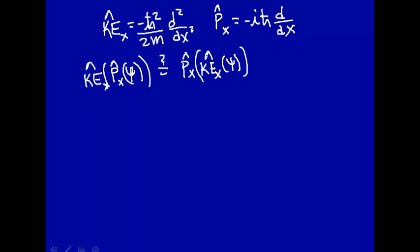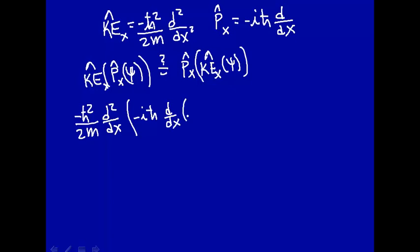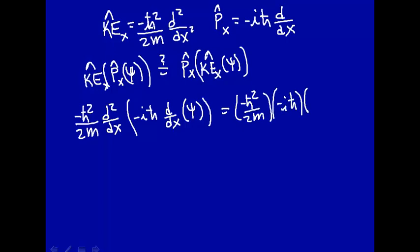Let's put in what these operators are. The kinetic energy operator, minus h-bar squared over 2m, second derivative with respect to x, times minus i h-bar, first derivative with respect to x, operating on some function psi. Since minus i h-bar is a constant, we can pull that out. This gives us minus h-bar squared over 2m times minus i h-bar, and we are left with the second derivative followed by the first derivative — that's the same as taking the third derivative.